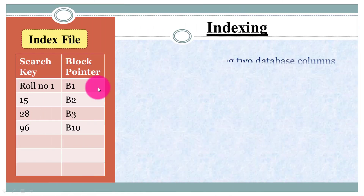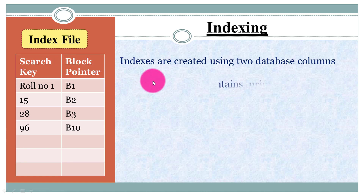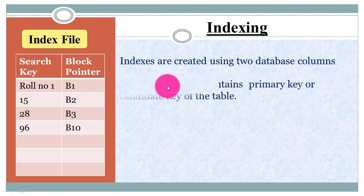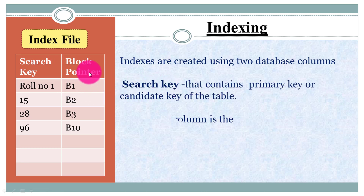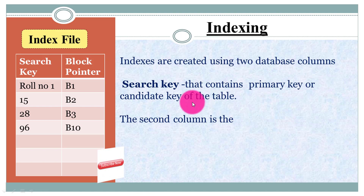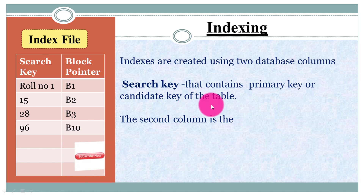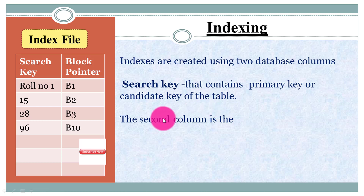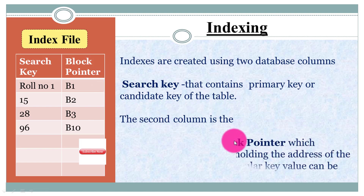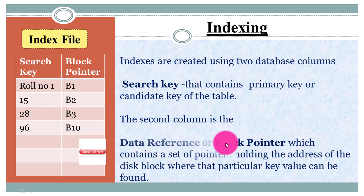The index file contains two columns: the first one is the search key, which contains the primary key or candidate key of the table — that is, the search value you are going to use to find the record. The second column is the block pointer, also called the data record pointer.